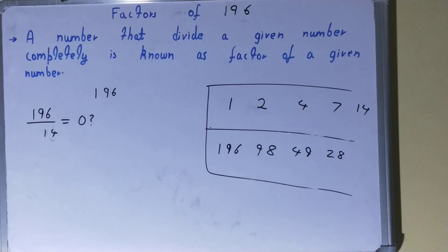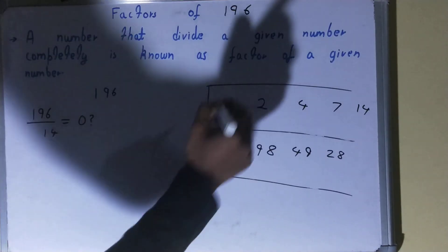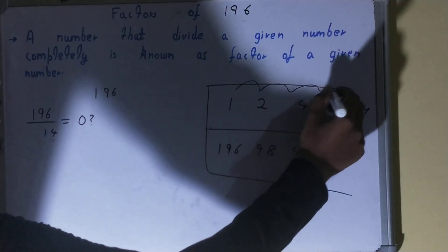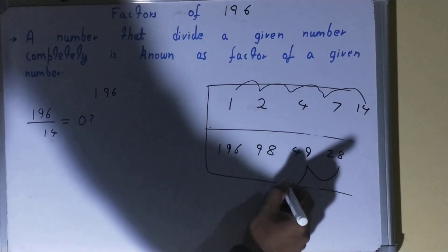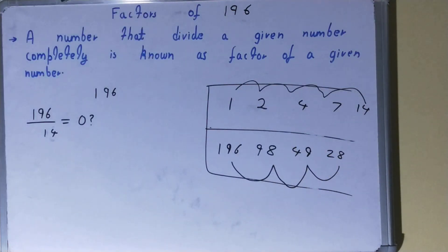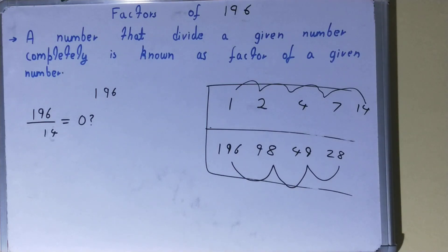The complete set of factors for the number 196 is: 1, 2, 4, 7, 14, 28, 49, 98, and 196. That was all about the factors of 196. If you found the video helpful, please hit the like button, consider subscribing, and thanks for watching.